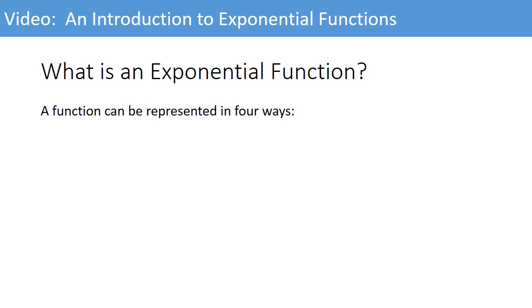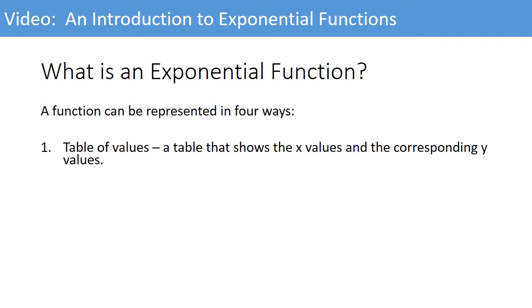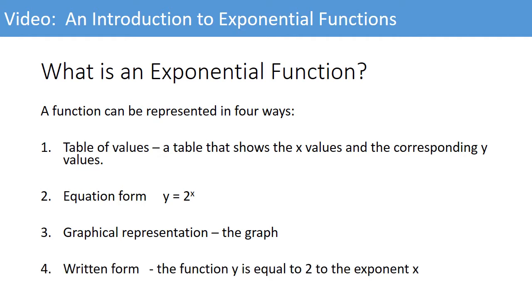A function can be represented in four ways. A table of values - this table shows the x values, or the input into the equation, and the corresponding y values that represent the results. In an equation form, y equals 2 to the exponent x. A graphical representation, the graph. And the last, of course, the written form: the function y equals 2 to the exponent x.